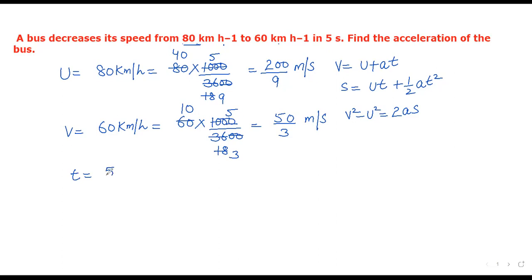Final velocity V = 60 km/h = 50/3 m/s. Time given is 5 seconds. We need to find acceleration. We have U, V, and t given, and need to find a. So we'll use the first equation of motion.